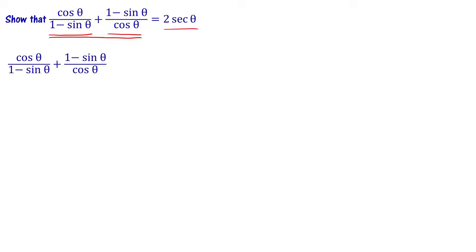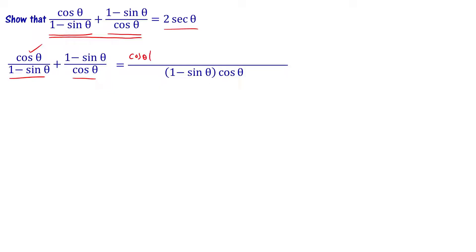Let us look at the left hand side expression: cosθ divided by (1 − sinθ) plus (1 − sinθ) divided by cosθ. The common denominator is (1 − sinθ) into cosθ. Dividing that denominator by (1 − sinθ) gives cosθ.